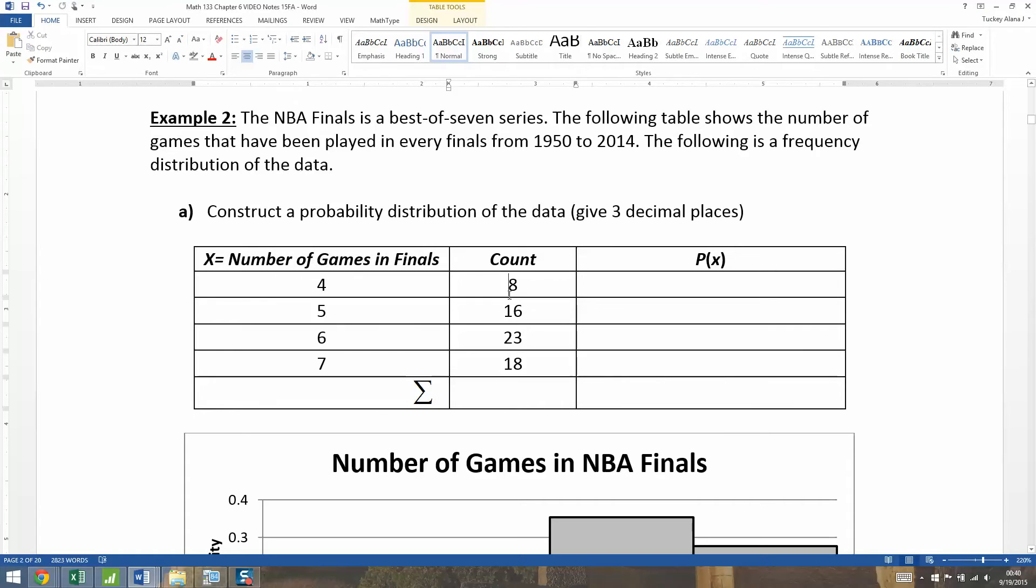The count is how many there were. For example, there's been a sweep - that's when the team that wins gets the first four games in a row. That's happened eight times. Five games has happened 16 times and so on. Now we want to find the probability, and the probability is going to be 8 divided by the total. We need to find the total for the counts - how many NBA Finals have there been?